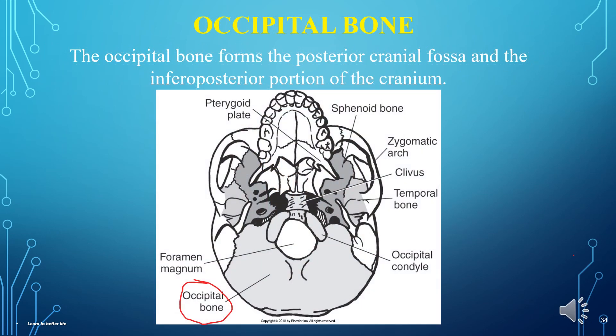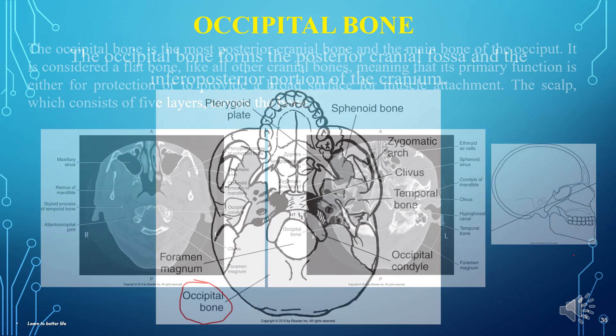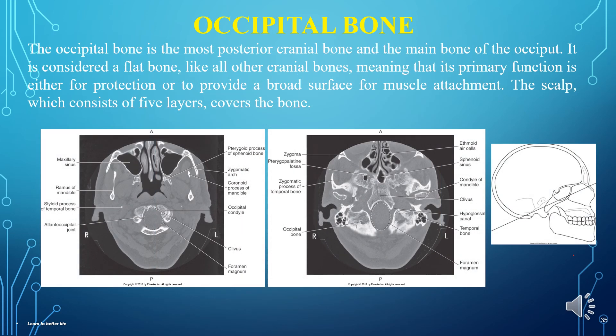The occipital bone forms the posterior cranial fossa and the inferoposterior portion of the cranium. It is the most posterior cranial bone and the main bone of the occiput. It is considered a flat bone, like all other cranial bones, meaning its primary function is either protection or to provide a broad surface for muscle attachment. The scalp, which consists of five layers, covers the bone.